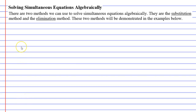This video is titled Solving Simultaneous Equations Algebraically, and we're just going to briefly explain what this is all about. We solve equations simultaneously when we have more than one variable. For example, let's say I have 2x plus y equals 3. Here we have more than one variable — we have two of them, x and y.